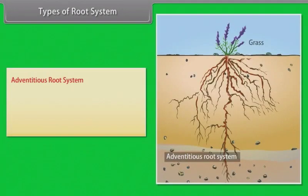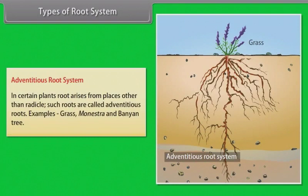Adventitious root system: In certain plants, roots arise from places other than the radicle. Such roots are called adventitious roots. Examples: grass, Monstera, and banyan tree.